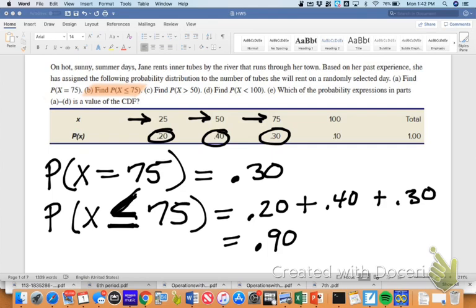And I'm going to stop right here for a second and skip to this part E, which asks which probability expression is a value of the CDF. CDF stands for cumulative distribution function and that's basically a great big word that stands for any values that are less than or equal to a certain value, so less than or equal, that symbol right there.